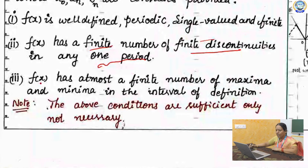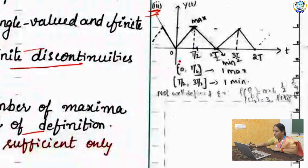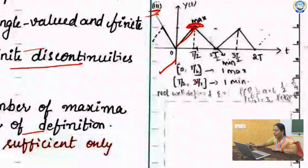Now see the third condition: f(x) has at most a finite number of maxima and minima in the given interval of definition. In this graph, if you take the interval 0 to T/2, you will observe a maximum point, and in the next interval T/2 to T, you will observe one minima. So f(x) has at most a finite number of maxima and a finite number of minima in the mentioned interval. The three conditions we discussed are sufficient only, but not necessary. Hence, we can conclude that we can also apply Fourier series expansions for discontinuous functions.